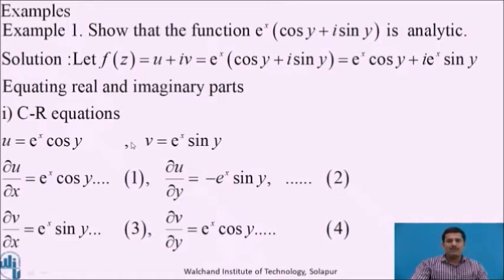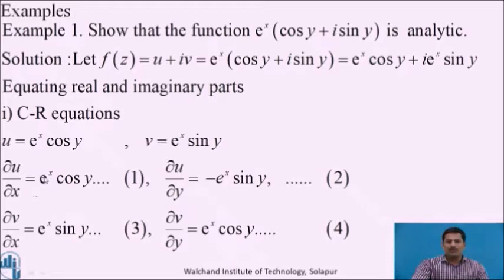In order to check whether the function is analytic, we will use the sufficient condition for analyticity. The first condition is to check whether the given function satisfies the Cauchy-Riemann equations. Differentiating u partially with respect to x, treating y constant, we get ∂u/∂x = e^x cos y. Differentiating u partially with respect to y, treating x constant, we get ∂u/∂y = −e^x sin y.